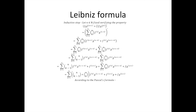According to Pascal's formula, we have the sum from k equal to 1 to n of n+1 choose k, times the kth derivative of f, times the (n minus 1 minus k)th derivative of j, plus the (n+1)th derivative of f times j, plus f times the (n+1)th derivative of j.